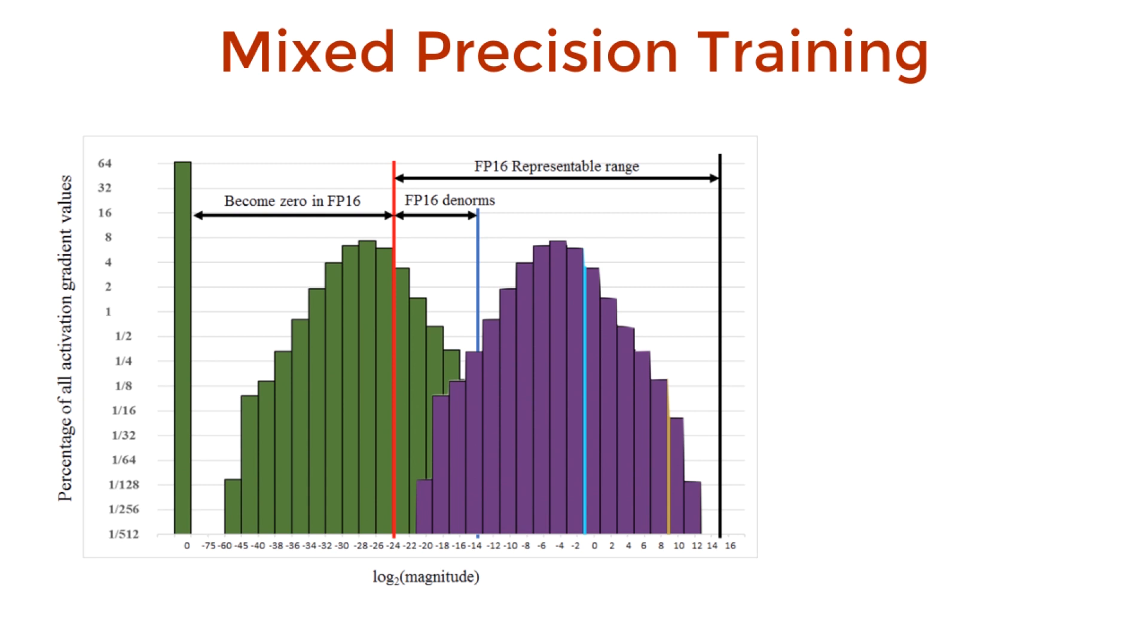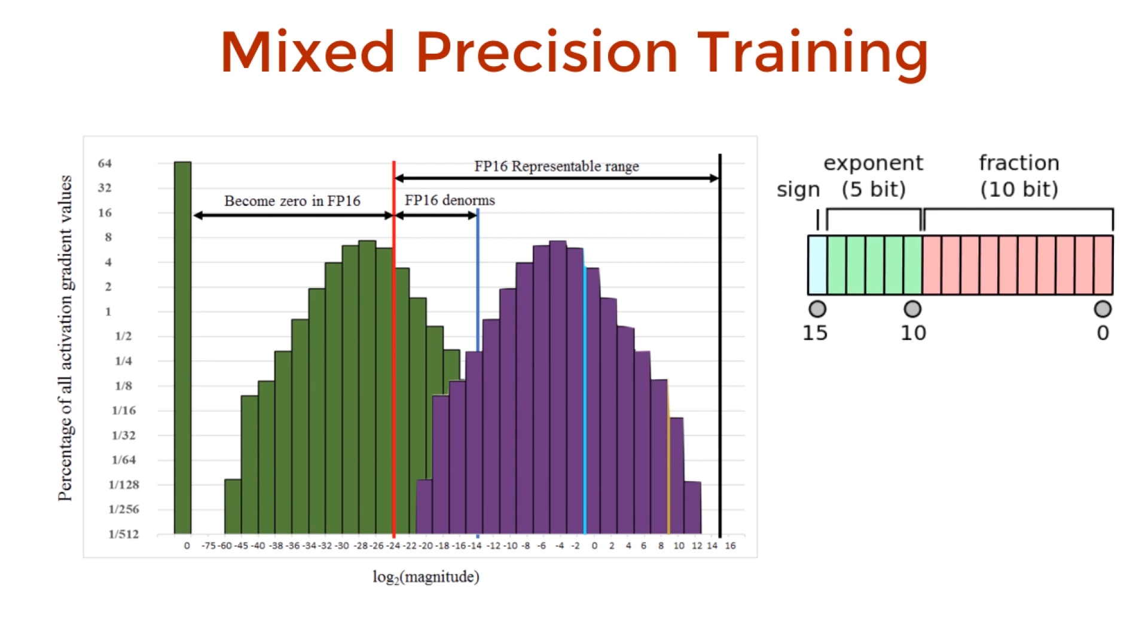In fact, we could represent numbers with 16-bits instead. This would reduce the memory storage for the model by half, making the training several times faster since we are making arithmetic operations with less bits. The only thing we need to worry about is accuracy.